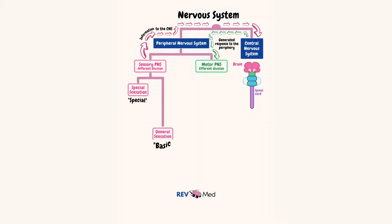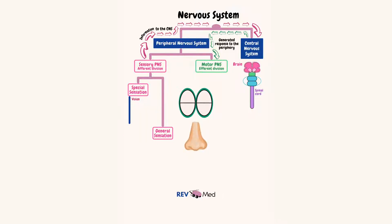The sensory PNS branches out further into general sensations and special sensations. Special sensation is quite obvious — specialized parts of the body. For example, vision: you can't smell through your eyes or see through your ears, right? Think vision, olfaction (smelling), taste, hearing, and equilibrium and position.